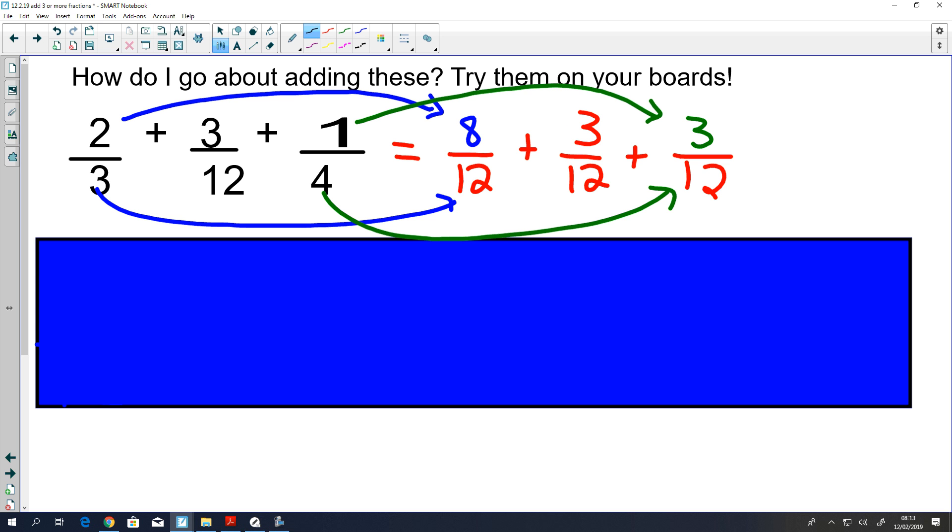So now I have 8 over 12, plus 3 over 12, plus 3 over 12. That's going to give me 14 twelfths. If you want to write that as a mixed number, 14 divided by 12 is one whole with 2 left over, and we can simplify that.